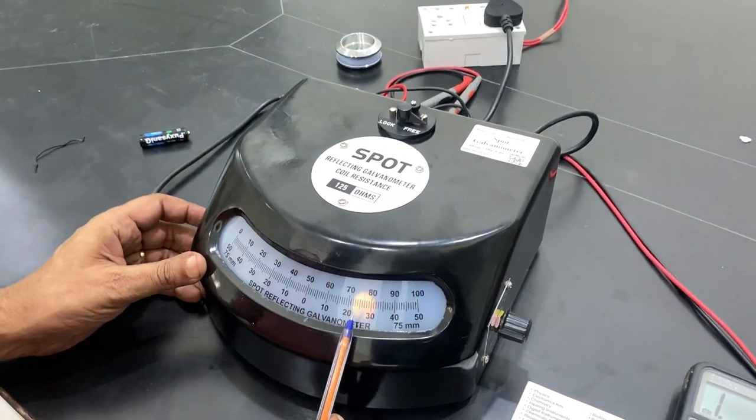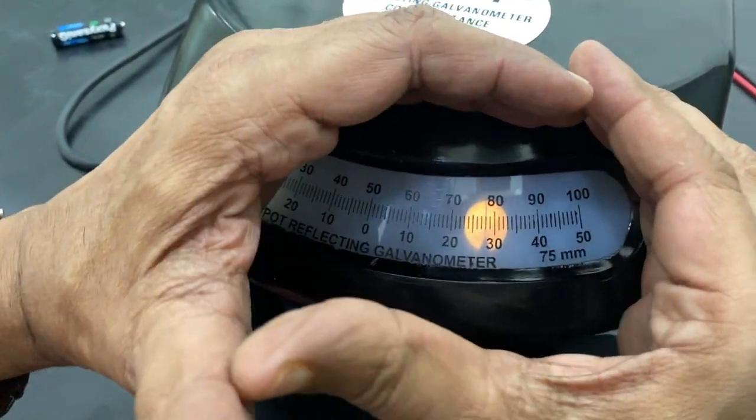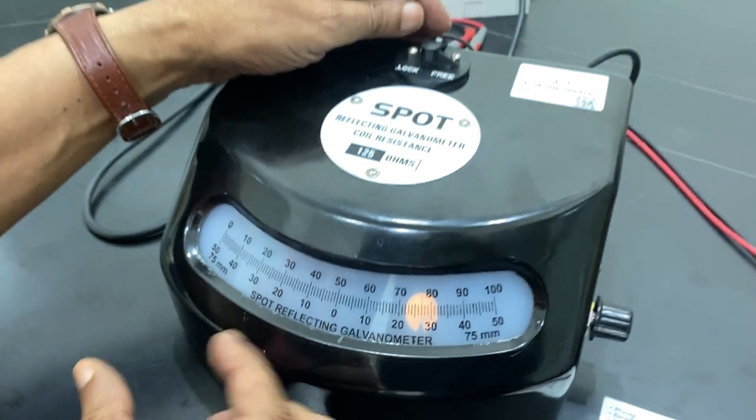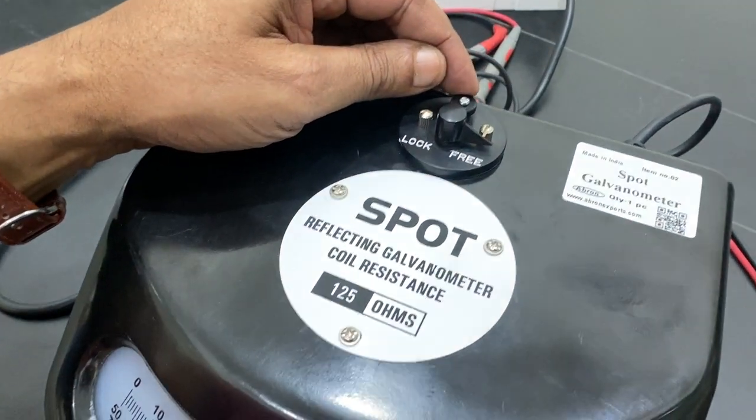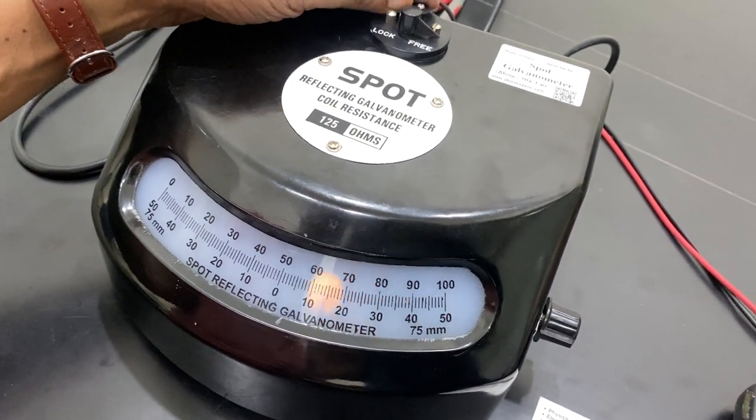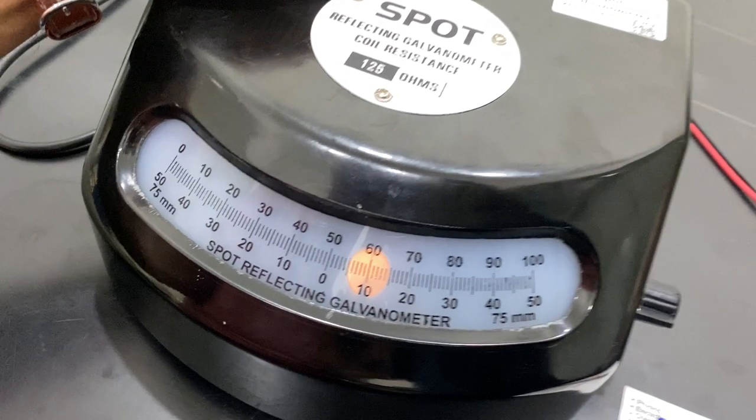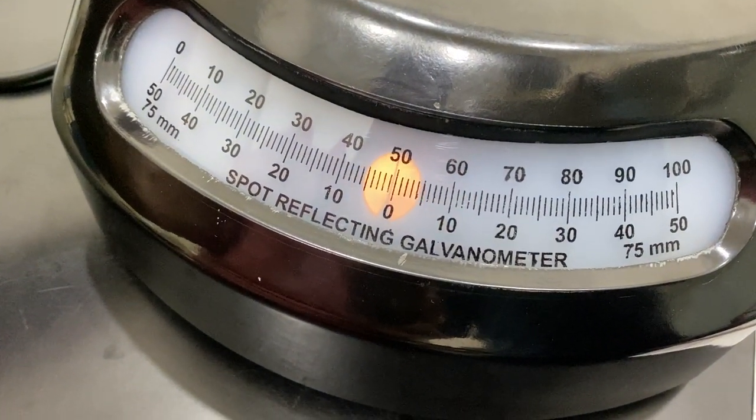When you switch on, you can see the light is coming. Now you can see the light is coming, and I can bring it to the center by the sensitivity changing position. I can now change it and see this. I am changing it slowly. I can bring it to the center here, and this is the center.